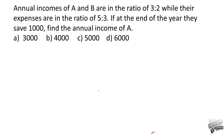In this first question, it is given that annual incomes of A and B are in the ratio of 3 to 2, while their expenses are in the ratio of 5 to 3. At the end of the year, they save 1000 each. Find the annual income of A.